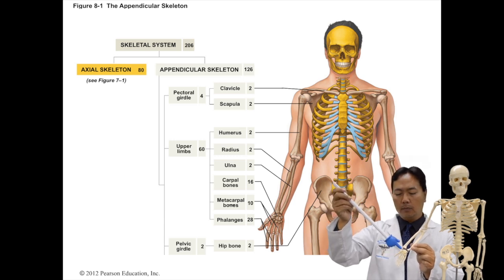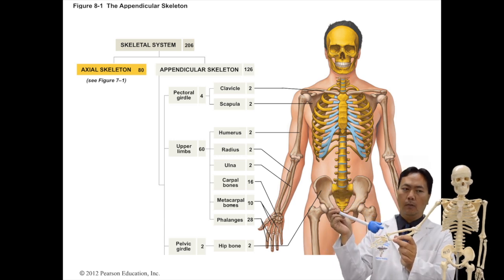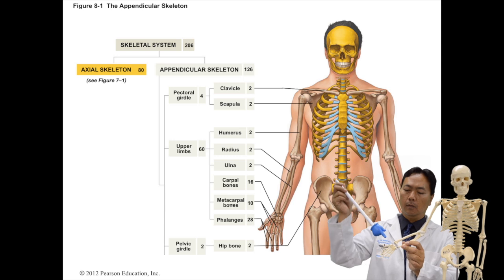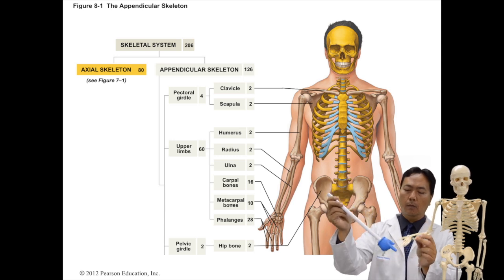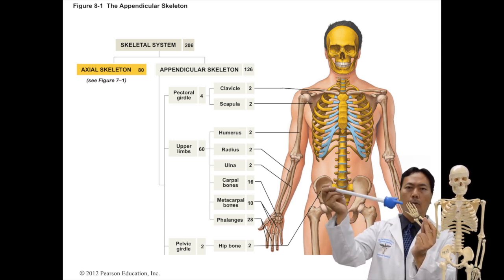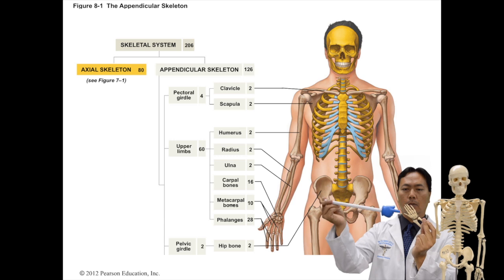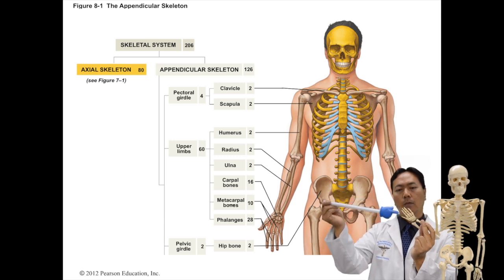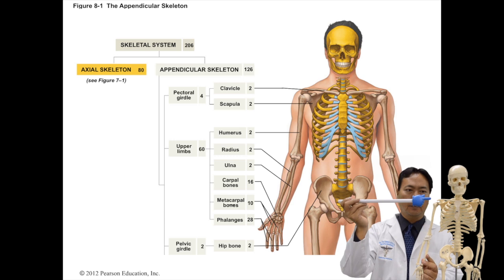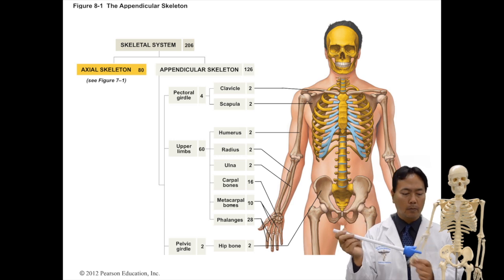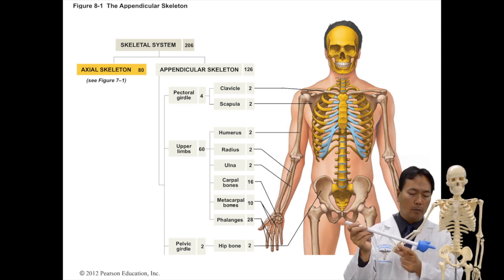The metacarpals are the five major bones that make the palm of your hand. The phalanges are the 14 bones located in each hand and also your feet — these are basically your fingers and the creation of knuckles. The hip bone is one solid mass, divided into three different parts.